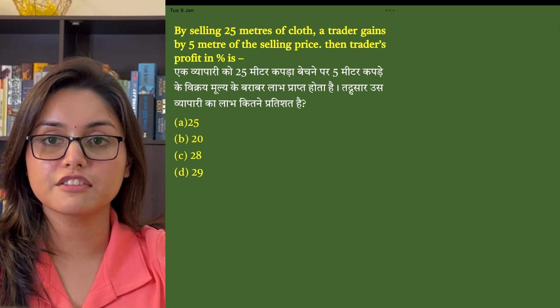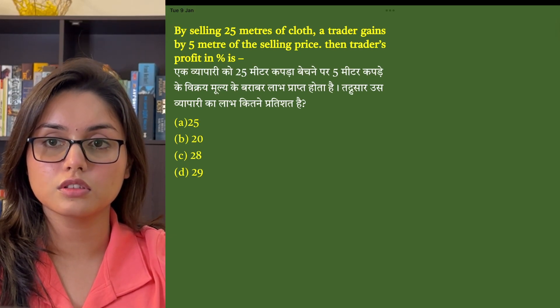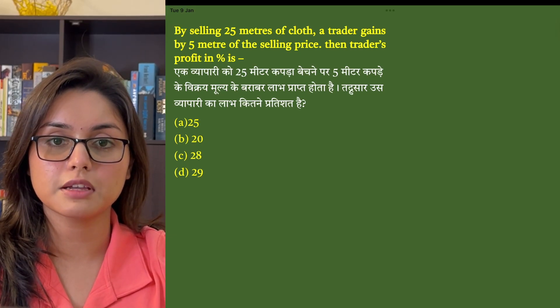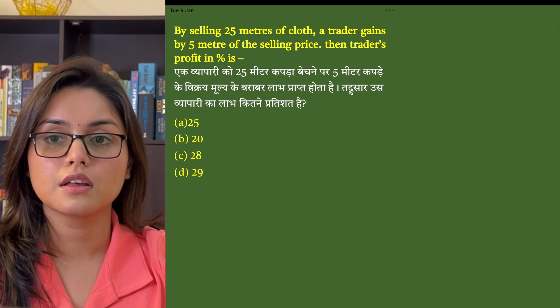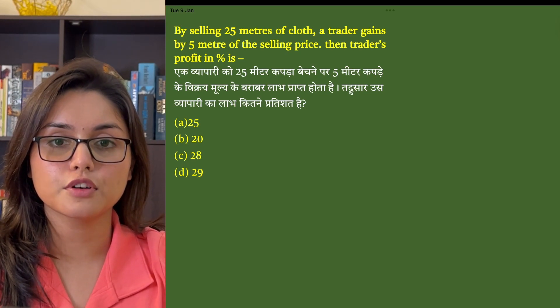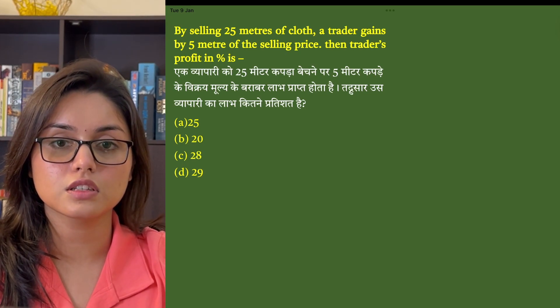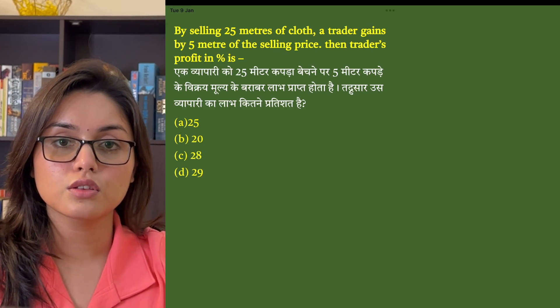By selling 25 meters of cloth, a trader gains by 5 meters of the selling price. Then, the trader's profit in percentage is?